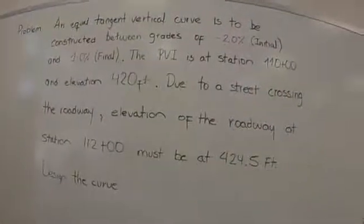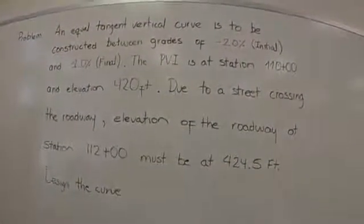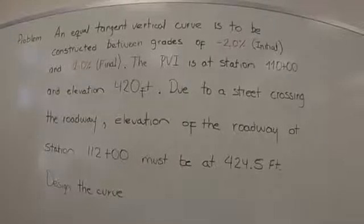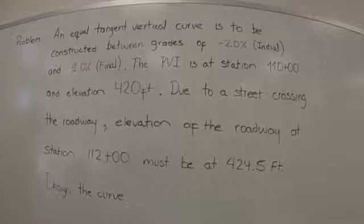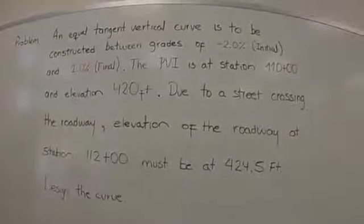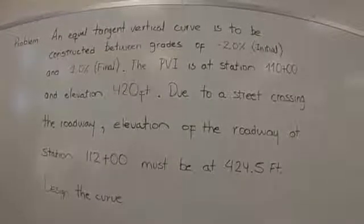An equal tangent vertical curve is to be constructed between grades of negative 2.0% initial and 1.0% final. The PBI is at station 110+00 and elevation 420 feet.